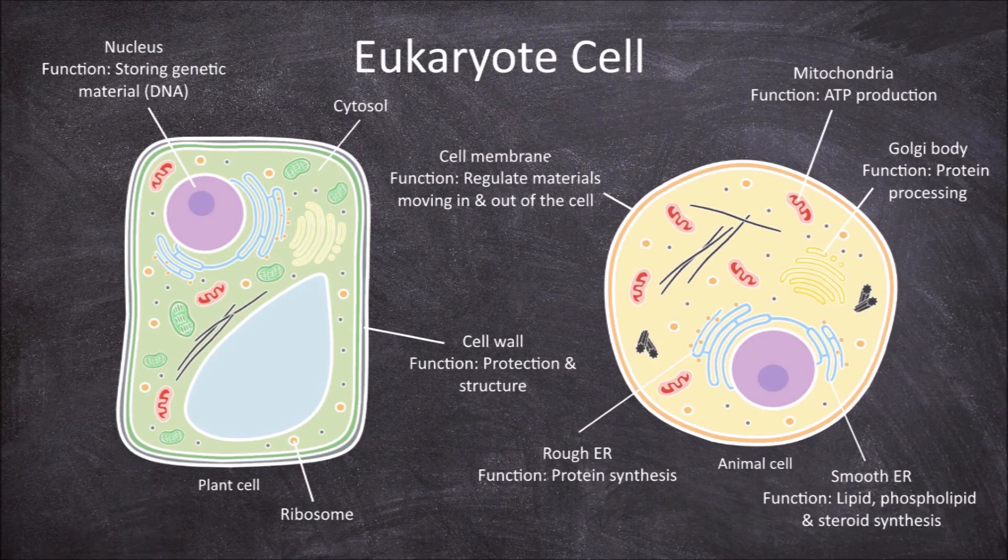Plants have additional organelles called plastids, such as the chloroplast. Plant cells also have a large central vacuole.